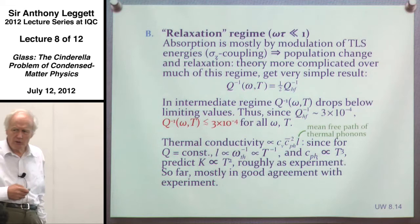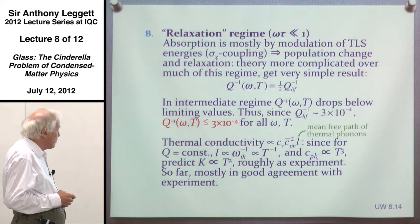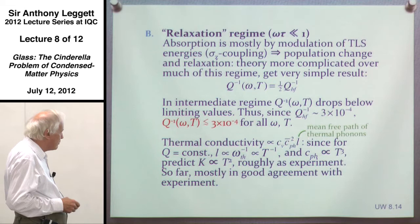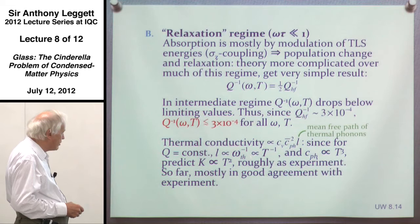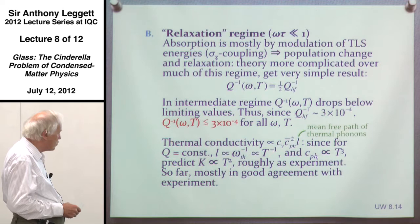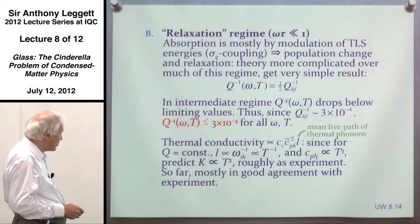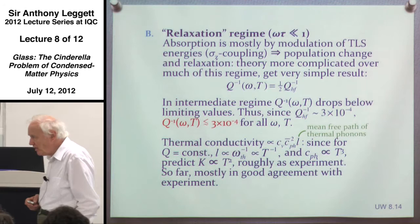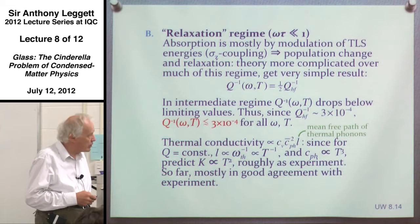What about the thermal conductivity? It goes as C_V times the mean phonon velocity times the mean free path. If Q is constant, that means the mean free path is inversely proportional to frequency, and therefore inversely proportional to T⁻¹. The specific heat here is the phonon specific heat, which goes as T³. Putting those together, we predict the thermal conductivity is proportional to T², roughly in agreement with experiment. So far, everything seems to be in rather good agreement with experiment.